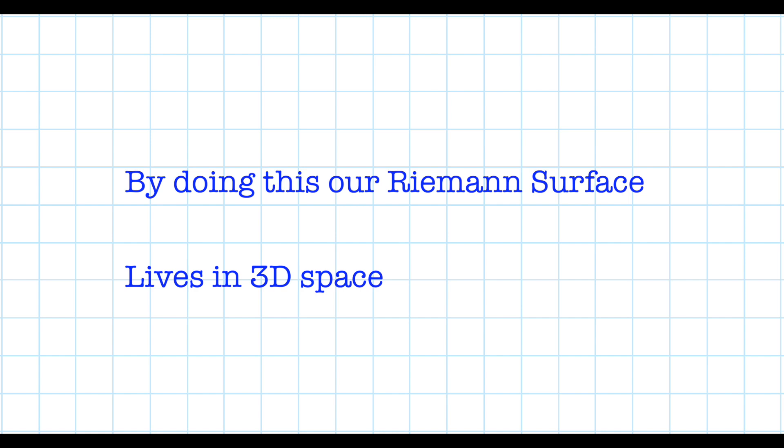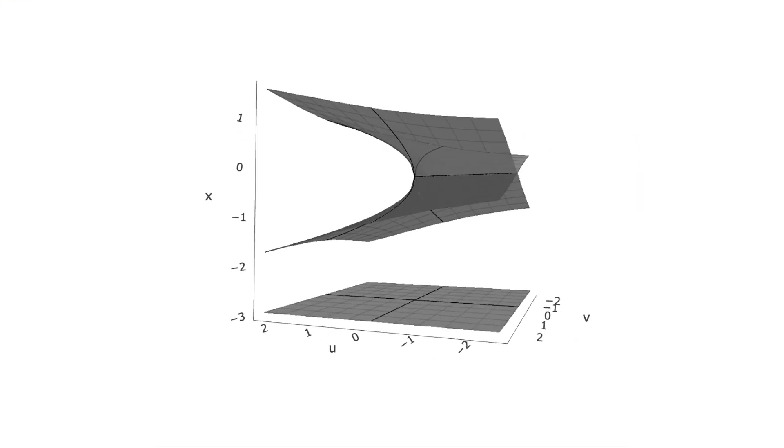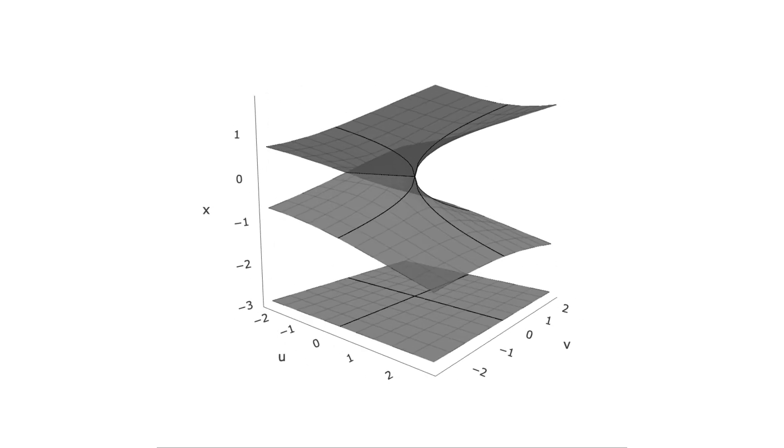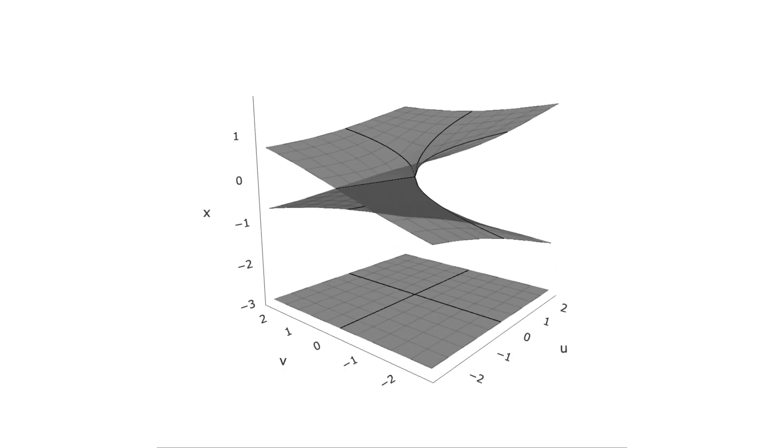Here we let x represent the height of this surface. By doing this, each point on our Riemann's surface corresponds to its u, v, and x values.